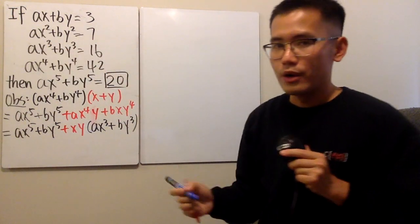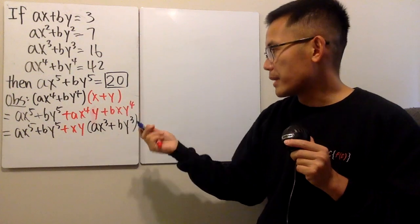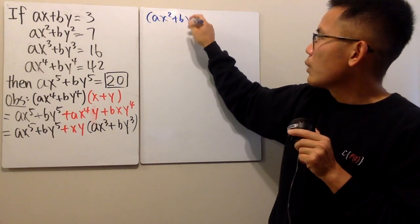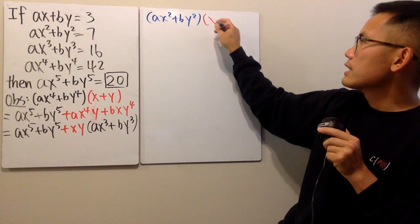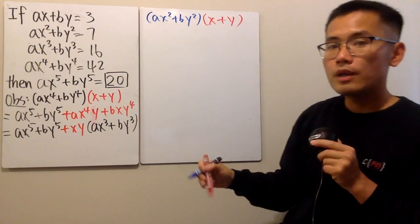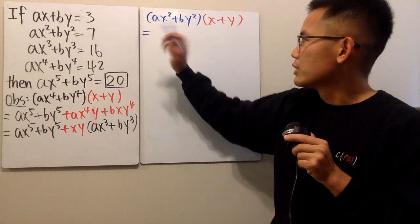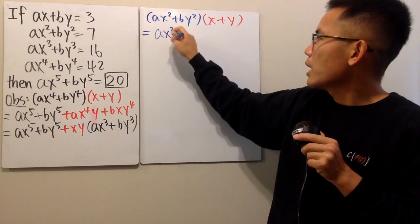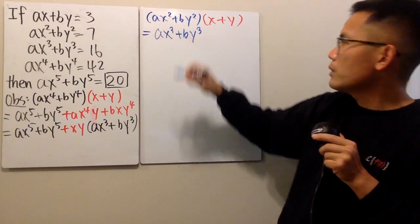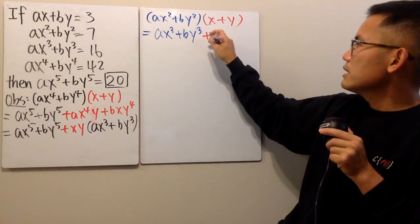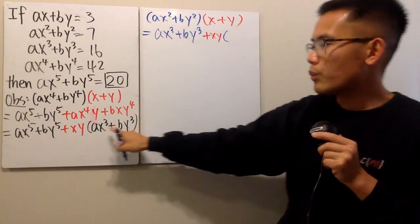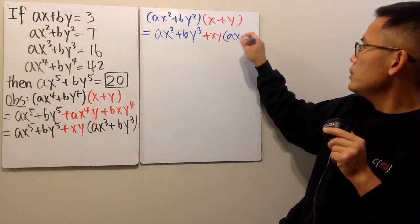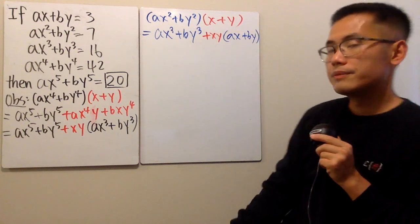I'll start with a lower power to build up the system. If we take ax² + by² and multiply by (x + y), the pattern shows that the powers go up by one — giving ax³ + by³ — plus xy times the term with powers down by one, which is ax + by. You can work out the algebra; the structure is the same.